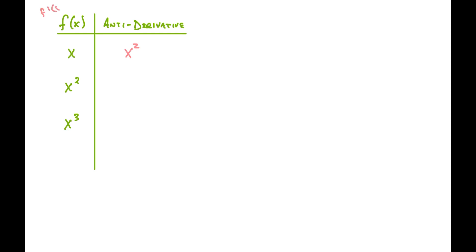When we think about taking the derivative of x squared and wanting to get back to x to the first power, the two comes out front as a coefficient. What we ultimately want is a value of one out front for our original function. So what would I have to multiply two by to get to one? It's going to be one half. Let's check: two times one half is one, subtract one from the power gives me the first power. So one half x squared is the anti-derivative. And we always have to put plus C on here, because there could have been some other constant. We always include plus C anytime we're taking the anti-derivative.